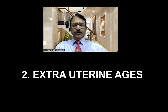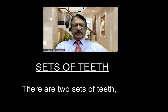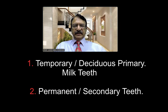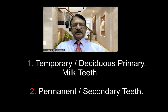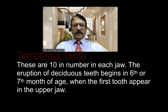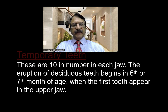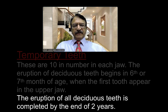In extrauterine ages, we know there are two sets of teeth: primary and secondary. The primary teeth are also called deciduous or milk teeth, whereas the permanent teeth are also called secondary teeth. The temporary teeth are 10 in number in each jaw. The eruption of deciduous teeth begins in the 6th or 7th month of life, when the first tooth appears in the upper jaw, and eruption of all deciduous teeth is completed by the end of 2 years.